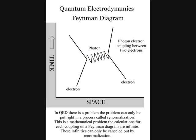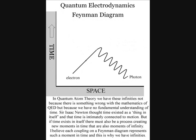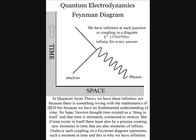The calculations for each coupling on a Feynman diagram are infinite. These infinities can only be cancelled out by renormalization. I believe we have these infinities not because there is something wrong with the mathematics of quantum electrodynamics, but because we have no fundamental understanding of time.